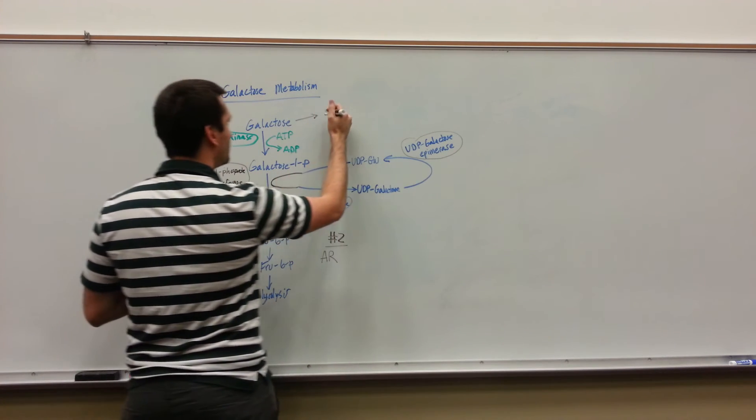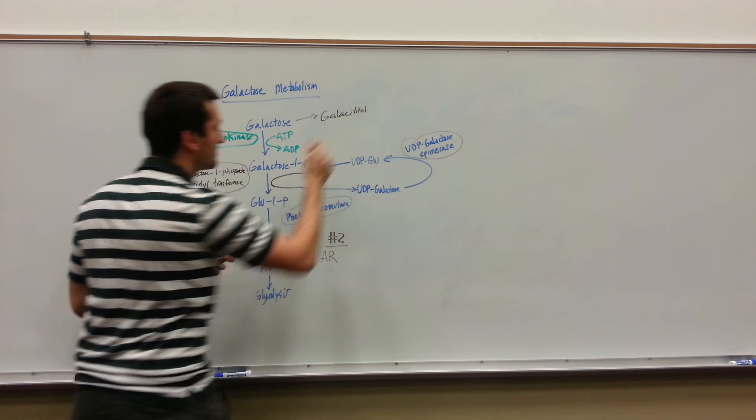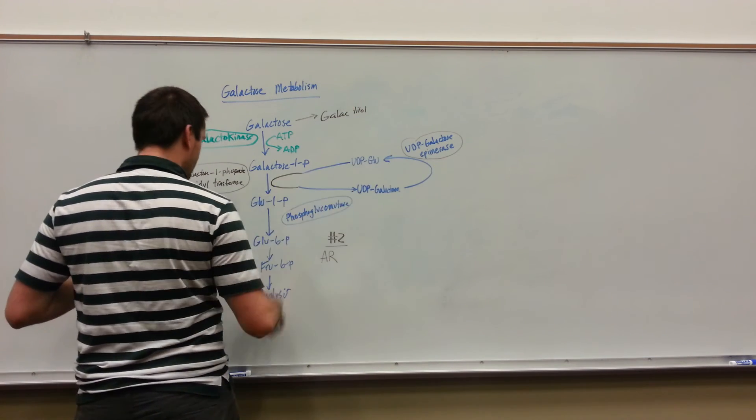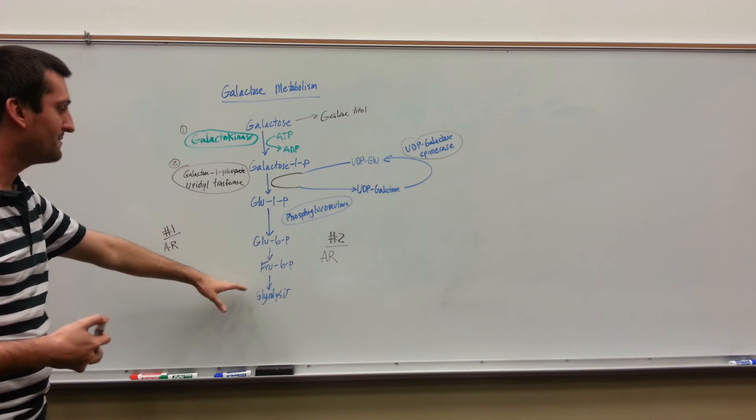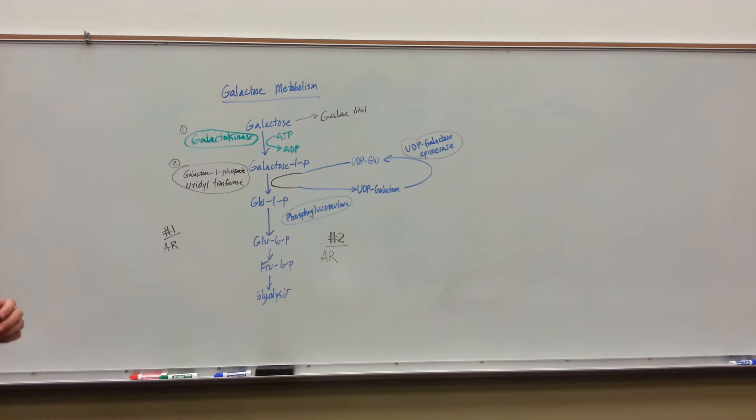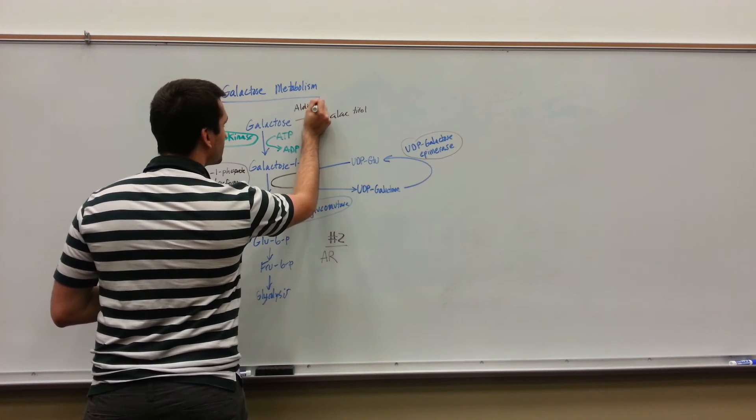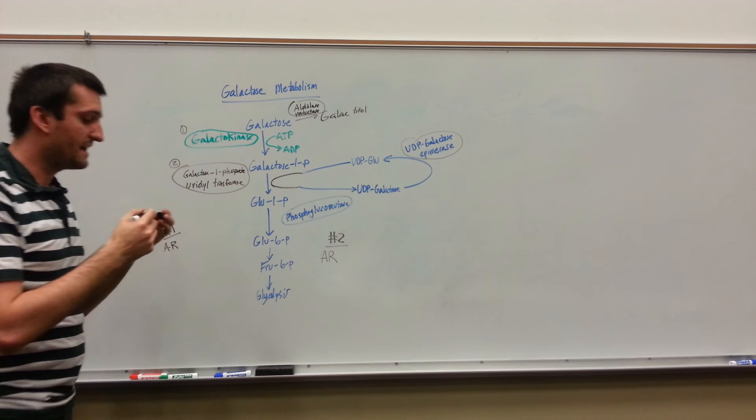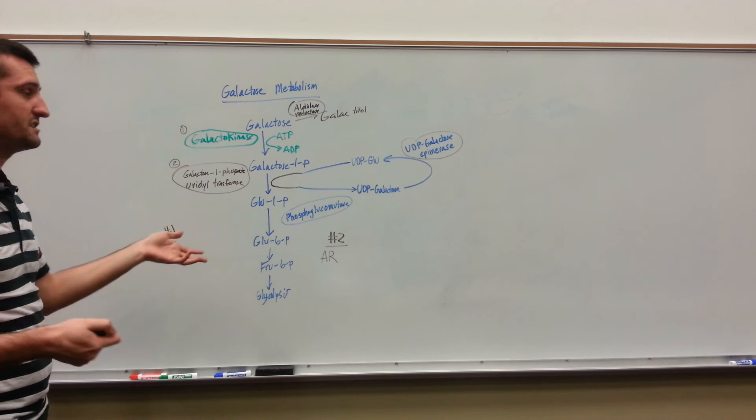It can get further broken down into galactitol. Galactose, if it's not metabolized via the correct mechanism, it can get broken down. That's going to be aldose reductase that's going to catalyze this reaction. This galactitol can build up within the lens of your eye, eventually leading to cataracts.